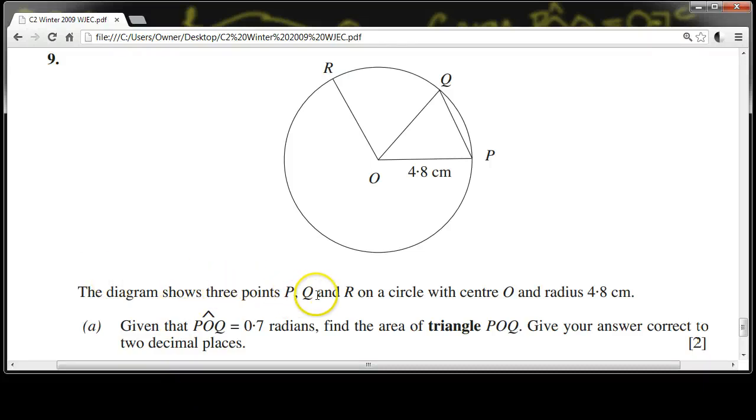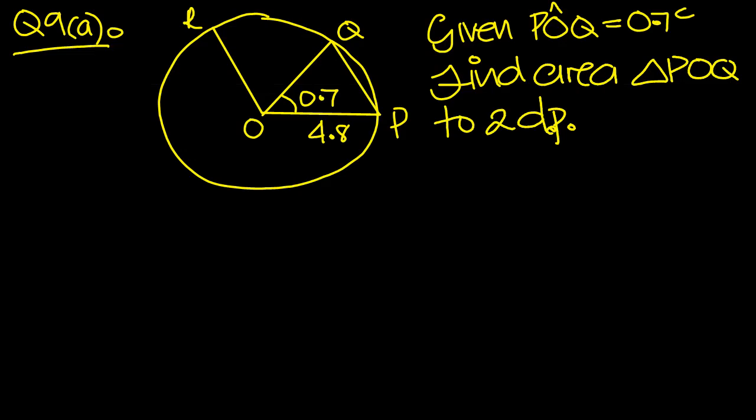The diagram shows three points, P, Q, and R, on a circle with center O and radius 4.8 centimeters. Given that angle POQ is 0.7 radians, find the area of triangle POQ. Give your answer correct to two decimal places.